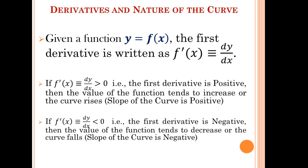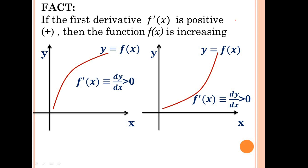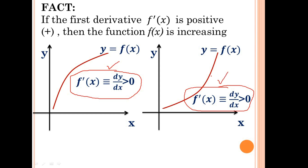If f prime x or dy/dx is greater than zero — that is, the first derivative is positive — what it means is that after differentiating the function y with respect to x, if the derivative is greater than zero, then the value of the function tends to increase, or the curve rises. So if the first derivative is positive, then the slope of the curve is also positive. If f prime x is positive, then the function f(x) is increasing, as we can see in both diagrams.